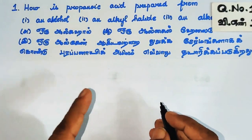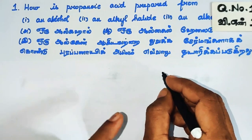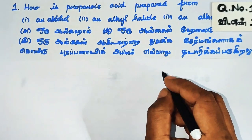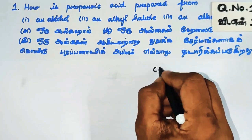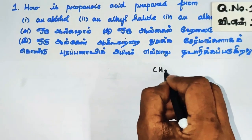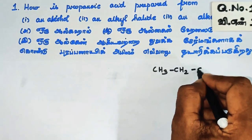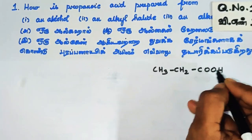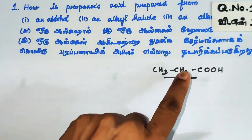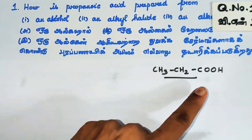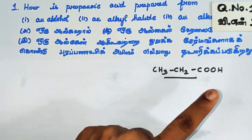Propanoic acid formula: CH3CH2COOH. This is propanoic acid — it has 3 carbon atoms in the group.